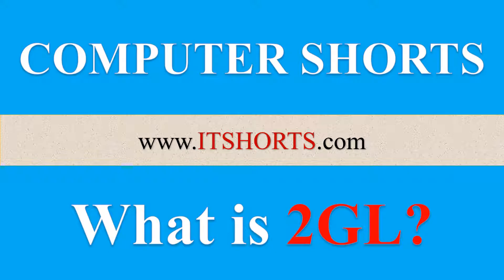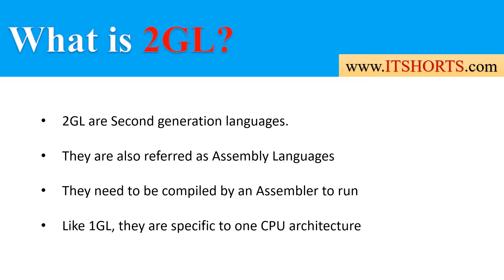Welcome to ITShorts.com. In this video, let's take a look at what is 2GL. 2GL are second generation programming languages. They are second generation because they stay in between the machine language, which is the first generation language, and the higher level languages like 3GL and 4GL.